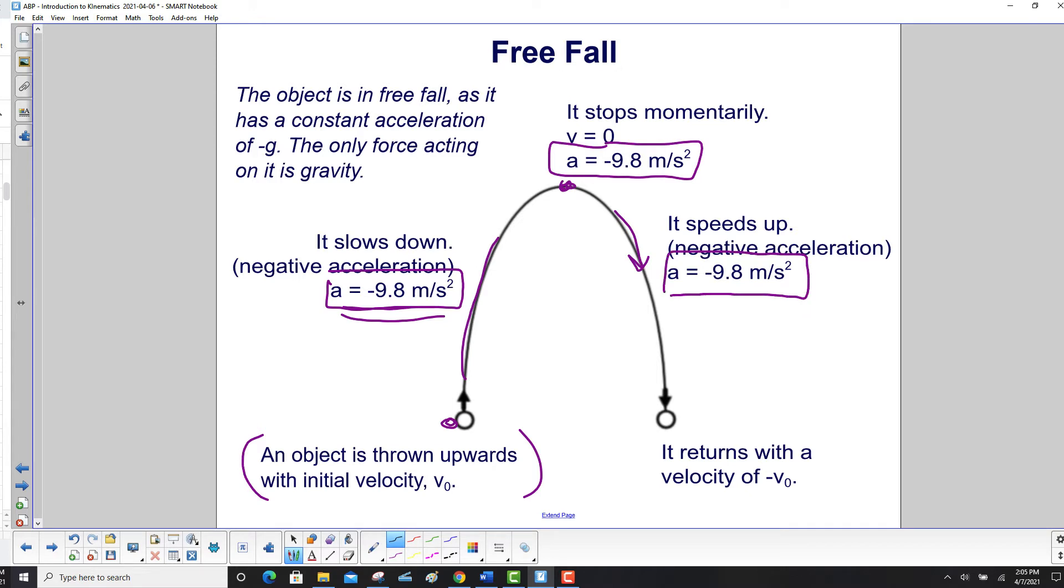Then, it will return with a velocity of negative v0. The velocity it took off with is the same in magnitude as the velocity it returns with, but it's just in the opposite direction. You're coming down.